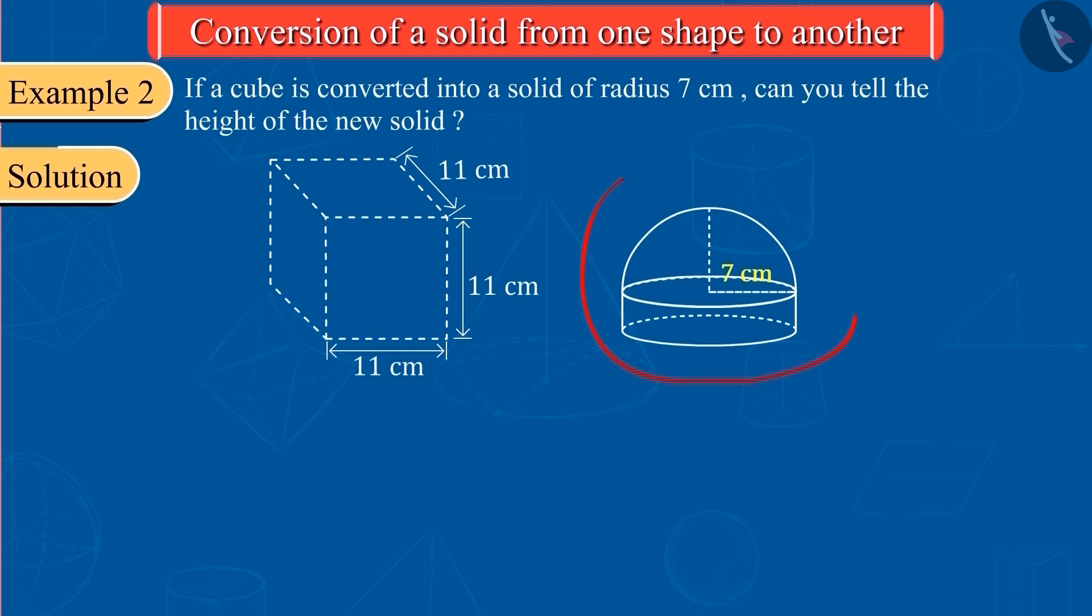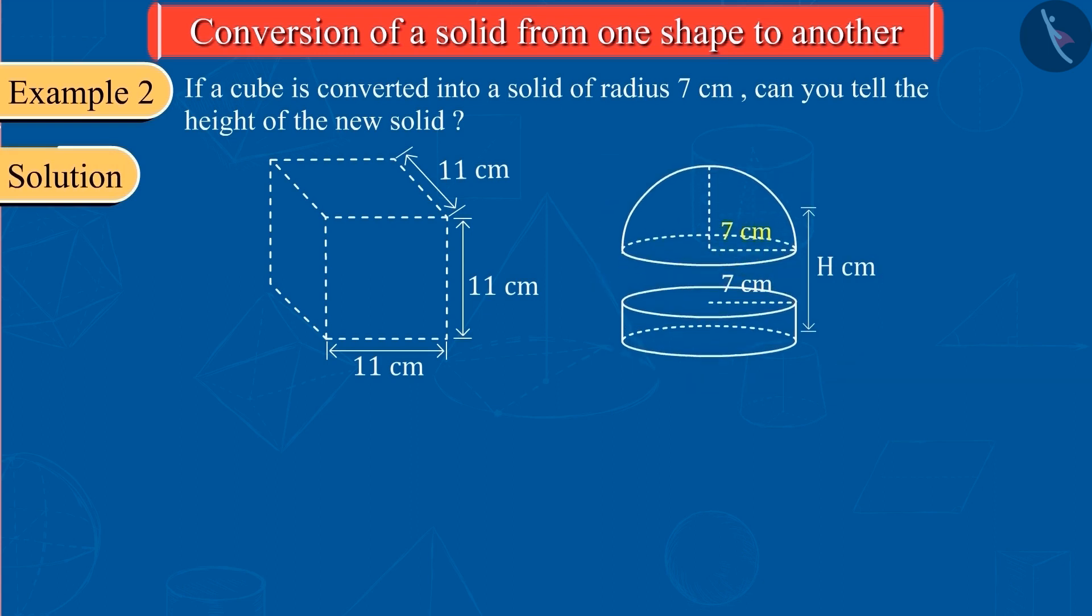Let the total height of this new solid made by Sanjana be capital H. From the picture, we can see that the new solid is made of a hemisphere and a cylinder. We can also see that the radii of these two solids are equal, i.e., 7 cm.